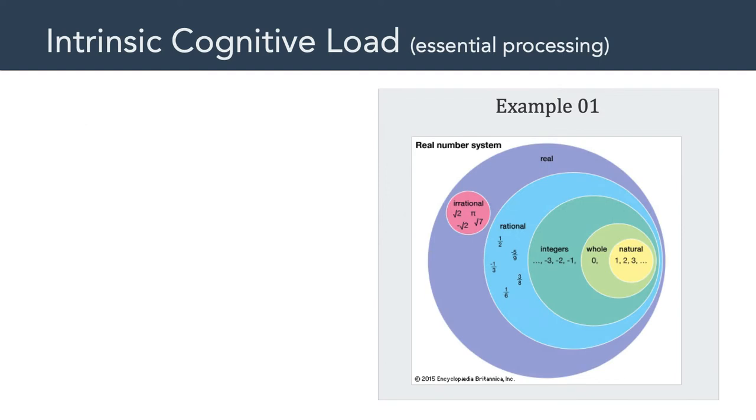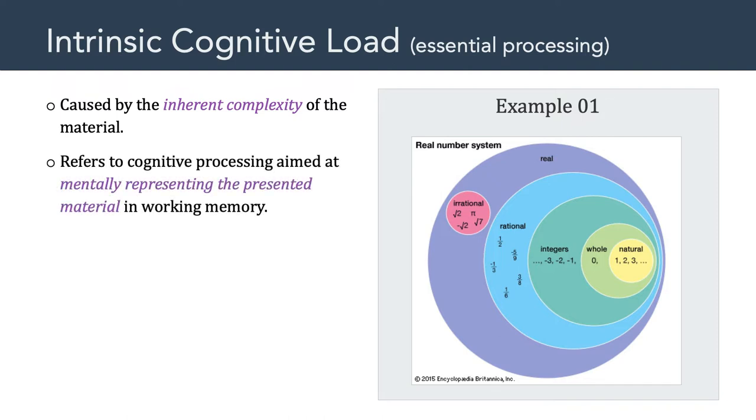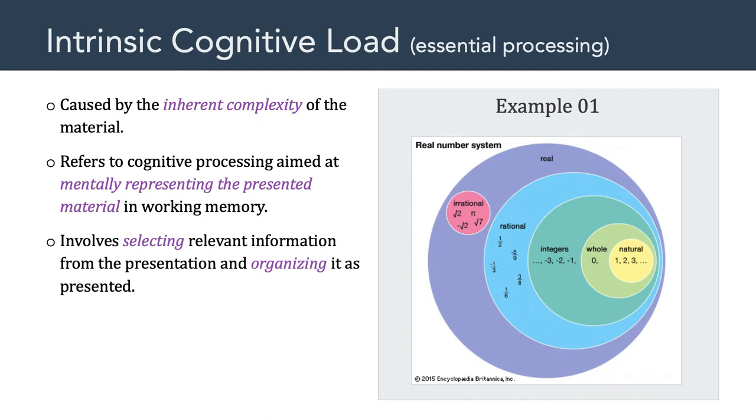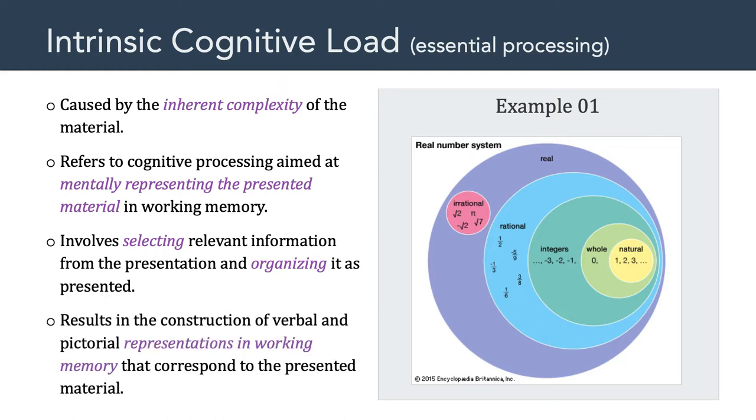Now, the first type, intrinsic cognitive load, is caused by the inherent complexity of the material you're asking someone to learn. And, that's because people have to mentally represent the presented material in their working memory. And so, if that material is more complex, the intrinsic cognitive load increases. Intrinsic cognitive load involves selecting relevant information from a presentation, and organizing it as it's presented. For those of you who are familiar with Mayer's Multimedia Learning Theory, intrinsic cognitive load is related to essential processing. In other words, the cognitive processing that has to happen in order for someone to make sense of a given presentation.